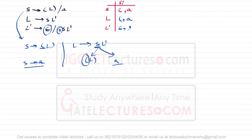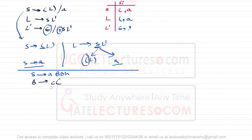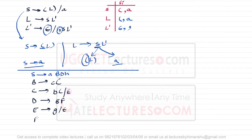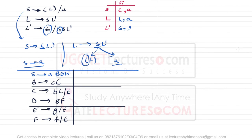Now let's take another example. Assuming the following grammar: S derives a B D h, where B derives small-c or capital-C, C derives B C or epsilon, D derives E F, E derives g or epsilon, and F derives f or epsilon. We need to find the First of all these non-terminals.